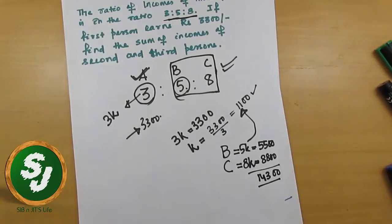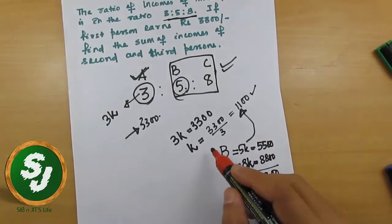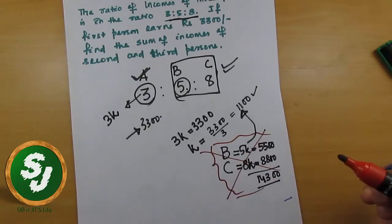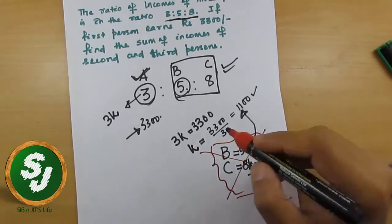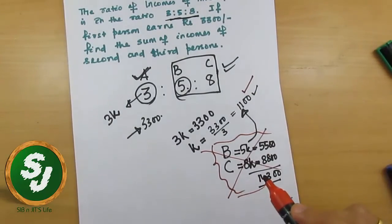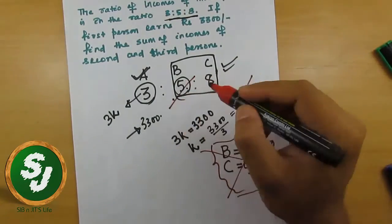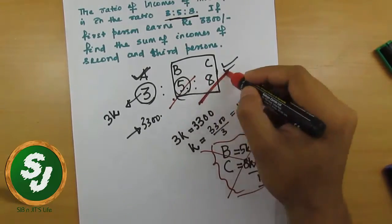But this process took a bit more time and is not the right approach. You should directly tackle what the question asks. We found out K, and the question is asking find the sum of income of second and third person, so you just find out what is the sum of incomes of B and C directly.